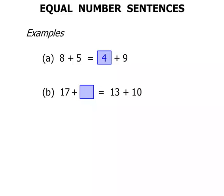The next one, 17 plus something equals 13 plus 10. Well, this time, the numbers on the right, 13 plus 10, let's add them together, we get 23. So we get 23 on that side, we need to get 23 on the other side as well.